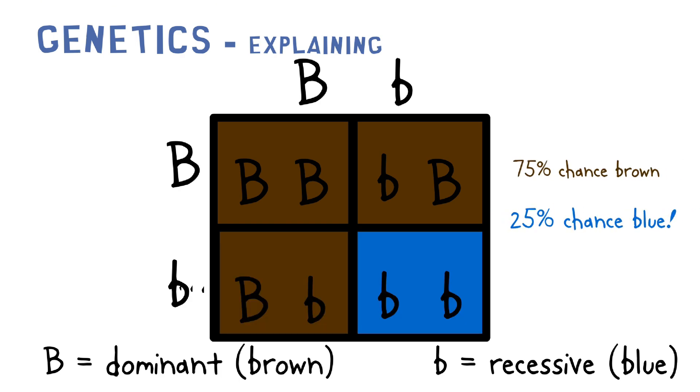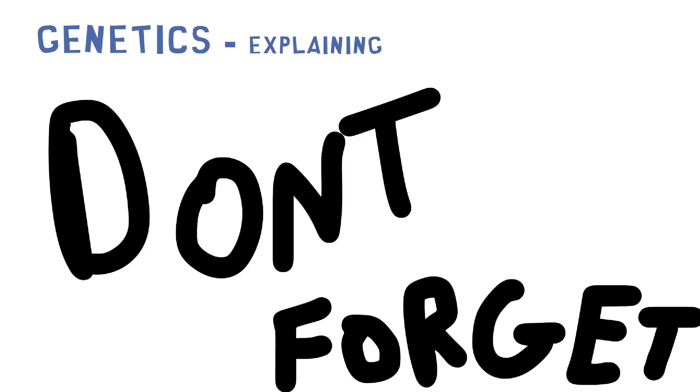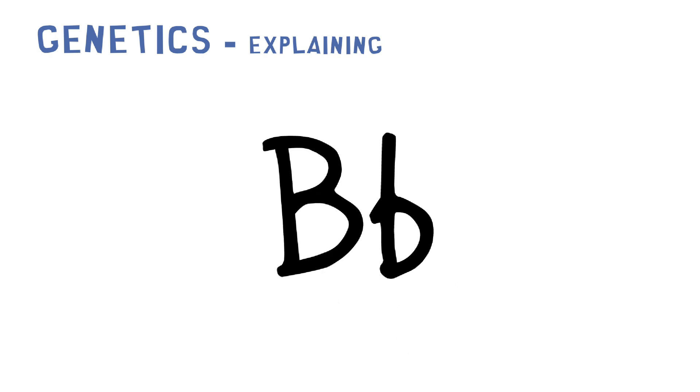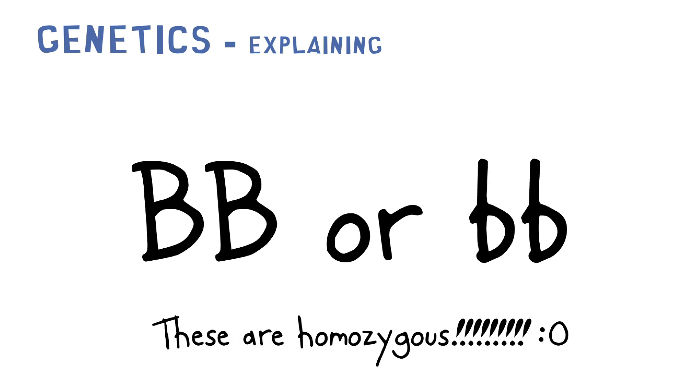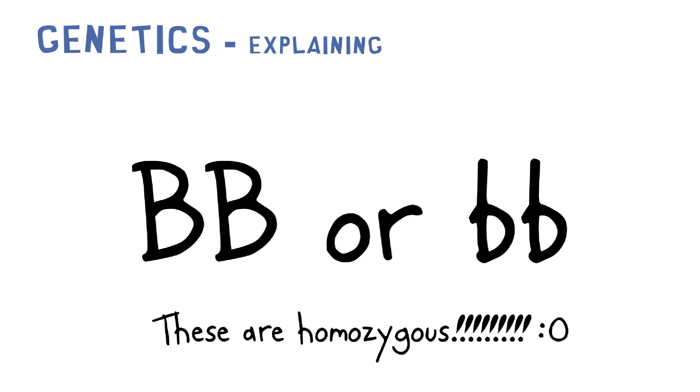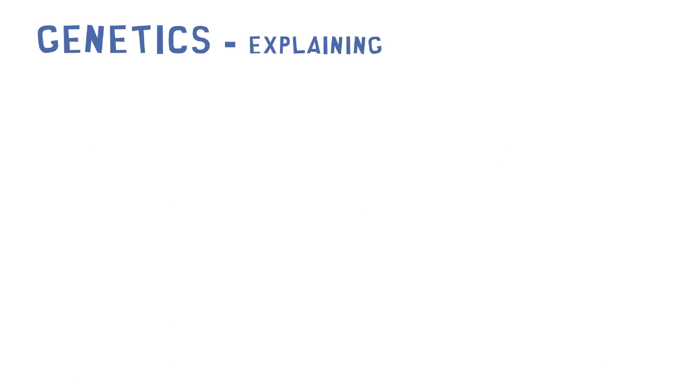Also, don't forget, if the Punnett square contains two letters that are different, that's heterozygous. Heterozygous is one dominant allele and one recessive allele. Now homozygous is where there's two of the same letter, so you could either have two uppercase B's or two lowercase b's.